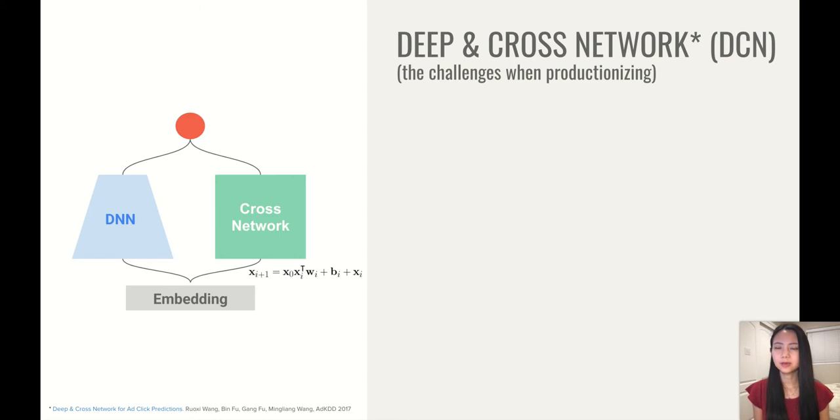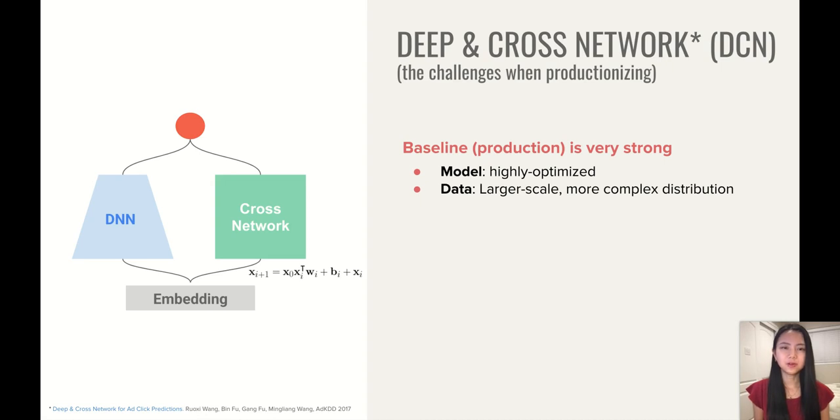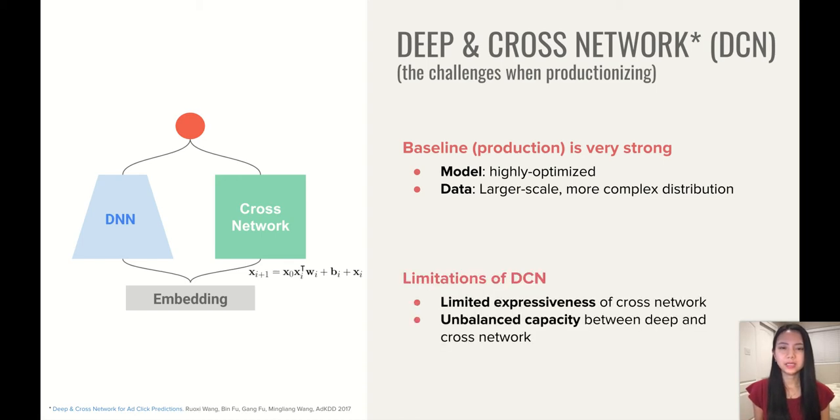So the plot you see here is an overview of DCN, deep and cross-network, where it has two parallel networks: DNN, which learns implicit feature interactions, and a cross-network, which was designed to learn explicit and bounded degree feature interactions. And there are two main challenges for productionizing. One is that the baseline is very strong. Many of the production models are highly optimized by many ML practitioners and researchers over many years. And also the production data is of much larger scale and has more complex distributions than the public ones. And another challenge lies in the limitations of DCN itself, where the cross-network has very limited expressiveness. And this has prevented it from modeling or learning those very complex feature interaction patterns. And also the capacities between the deep and the cross-network are very unbalanced.